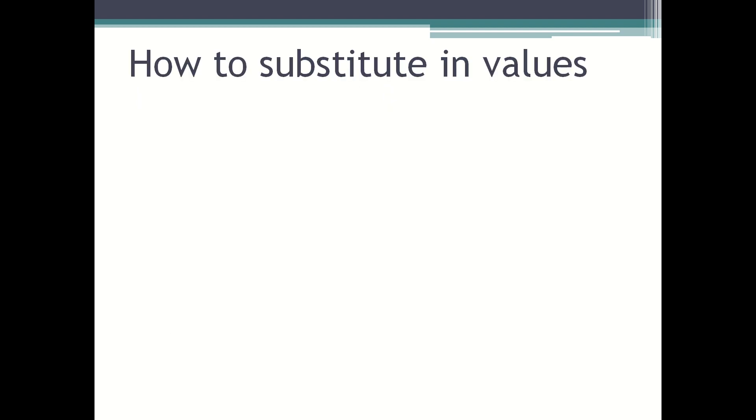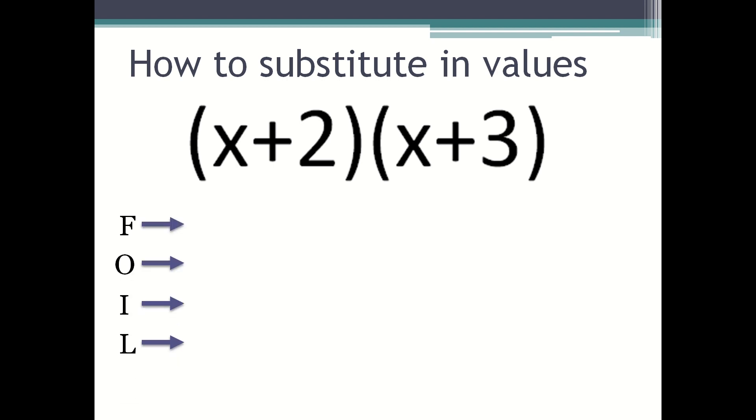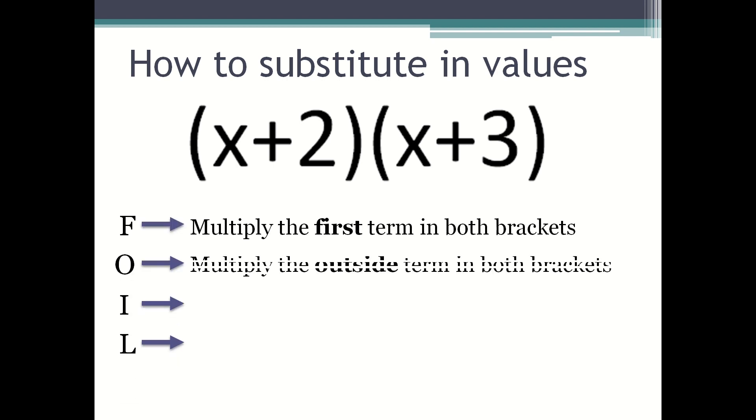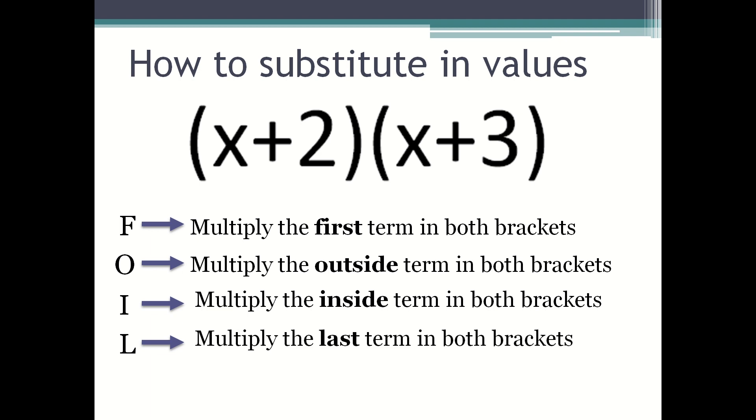How to substitute in values into that formula: for example, if you have to expand double brackets (x + 2)(x + 3), you FOIL it. So you multiply the first term in both brackets, you multiply the outside term in both brackets, you multiply the inside terms in both brackets, and then you multiply the last terms in both brackets.